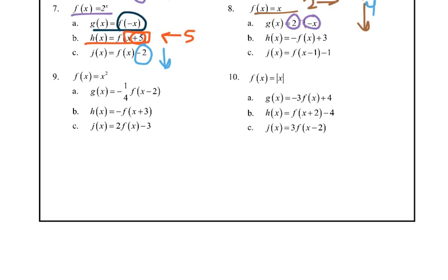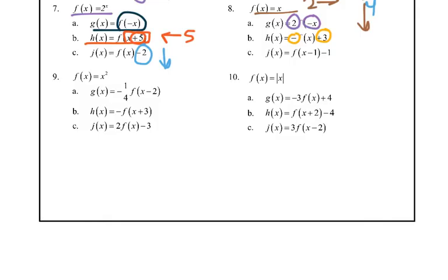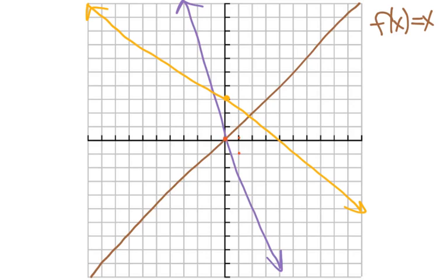For the next one, we've got a negative outside — that reflects it across the x — and then we're adding 3, so we bump it up 3. Then we go that opposite way without a vertical or horizontal stretch. And finally, we move it to the right one with h and with k down one — so we move it over to the right and down one, and then we draw basically a parallel line because it's still the same type of line.